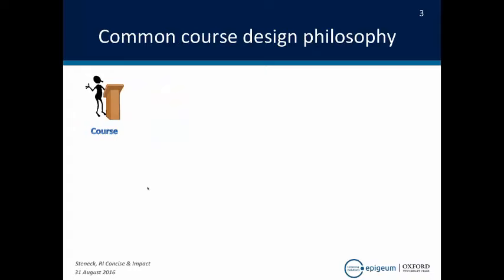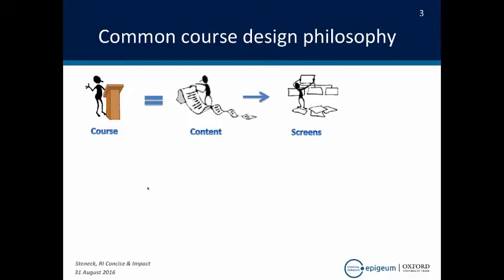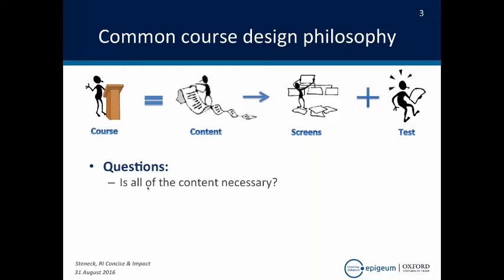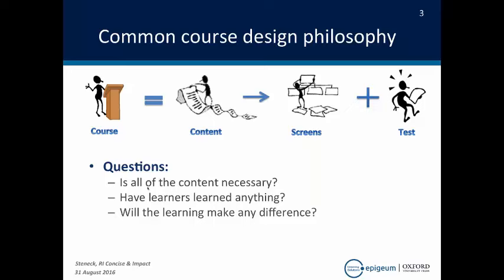With online courses, typically the design philosophy is you start with the content, put that content up on a few screens — essentially take a book and put it on the screens — add a test, and you have a course. And that is what much online training is. So you kind of ask yourself: is all the content necessary? Have learners actually learned anything from this approach? Will the learning make any difference? Is this approach to training actually working? And Epigeum reached the conclusion that we could do better with online training, and so Epigeum early on developed a very different approach.